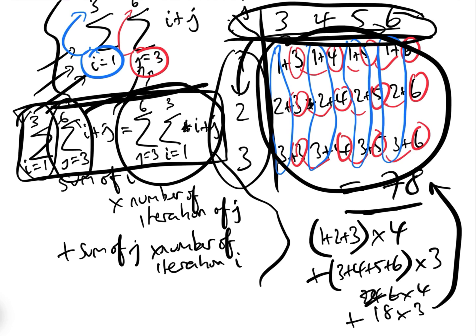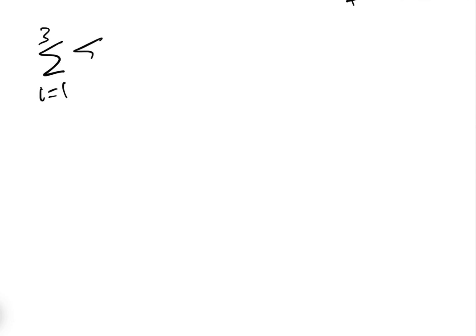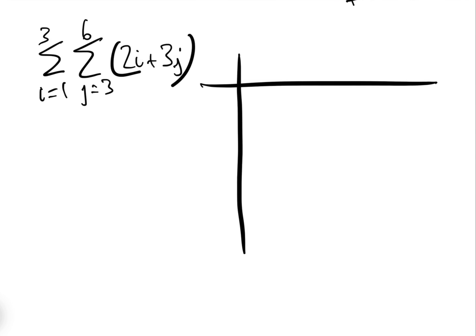Let's do another example. Imagine we have the sum between i equals one and three, and j equals three to six, of 2i plus 3j — so instead of i plus j, it's 2i plus 3j. If we draw the table again with j across the top as three, four, five, six and i down the side as one, two, three, then for i equals one and j equals three we get two times one plus three times three.